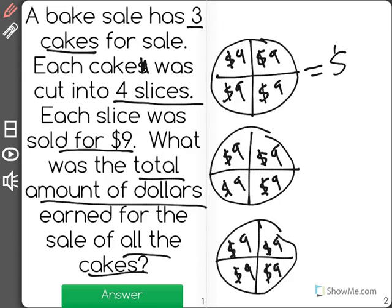This means that each cake total is worth $36, and when we add up three cakes worth $36,